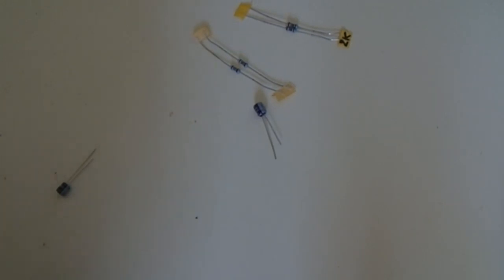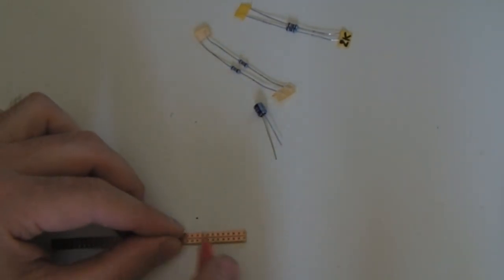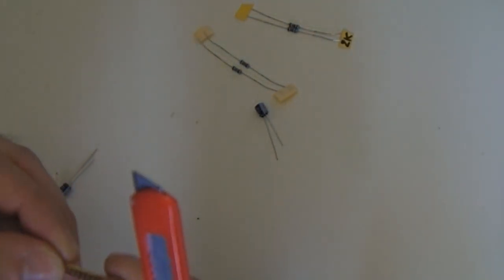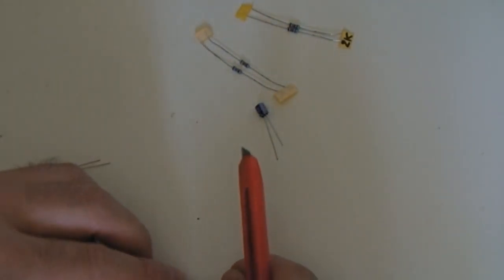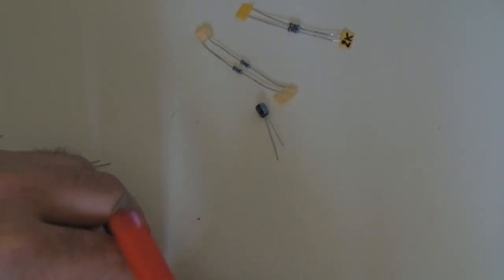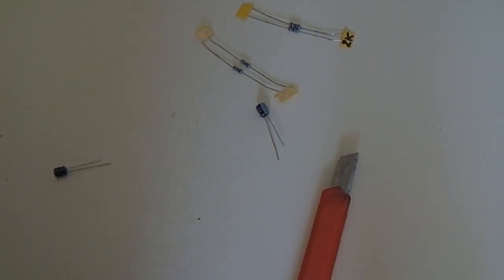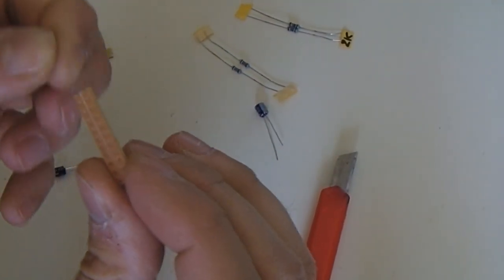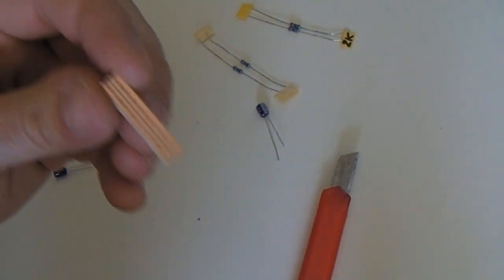I'll just make a mark through this copper, and then the other side. Score through there. Should break. There you go. Just breaks. There we go. There's our piece that we can use. Now I'll put the components on.